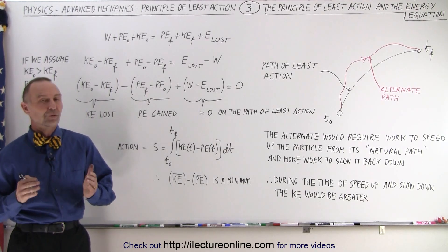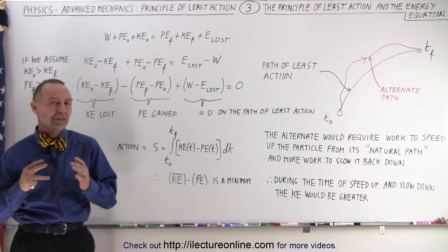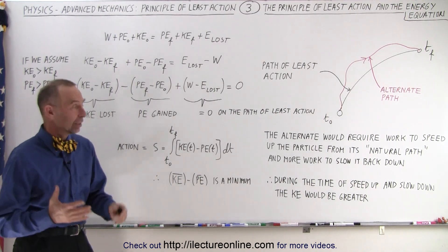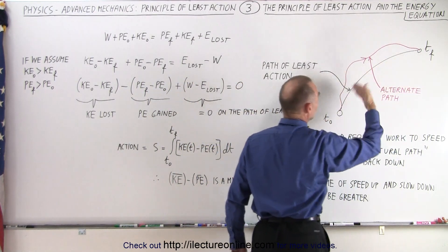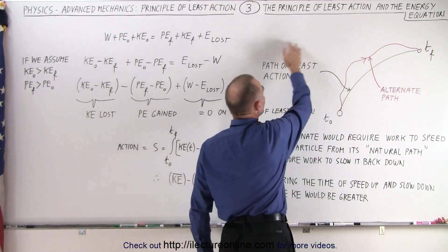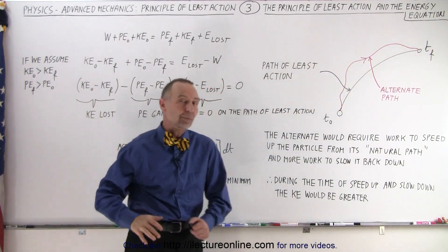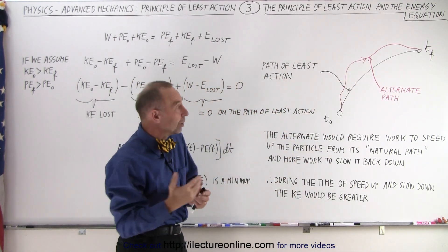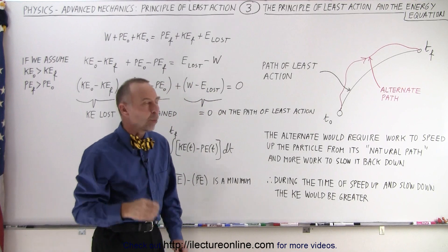Welcome to White Lecture Online. In order to get a better understanding of the principle of least action, let's take a look at it in terms of the energy equation that we're also familiar with. Let's have a little drawing here where we have an initial starting point of the particle and an end point of the particle. Let's assume that we're gaining potential energy and losing kinetic energy in this example, and let's presume that the black line here represents the path of least action. We're going to consider an alternate path and see why the particle will not take the alternate path — the particle will always take the path of least action.